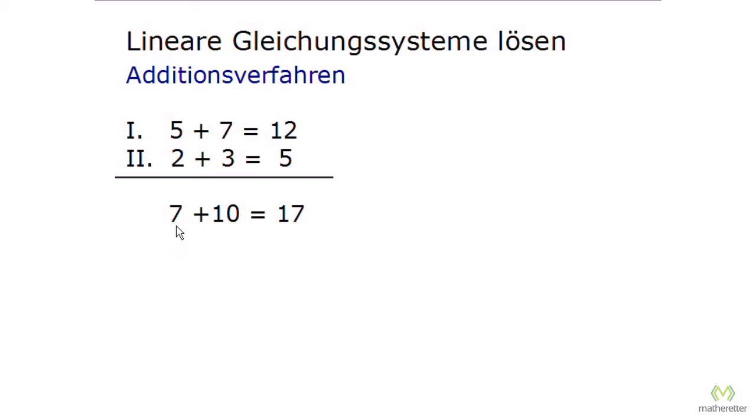And as we can see, when adding, we now have 7 plus 10 on the left. And that's 17, exactly the sum that we now have on the right side. That is, if we add both equations on the left, and add both equations on the right side, both sides are still equivalent, and are the same value.